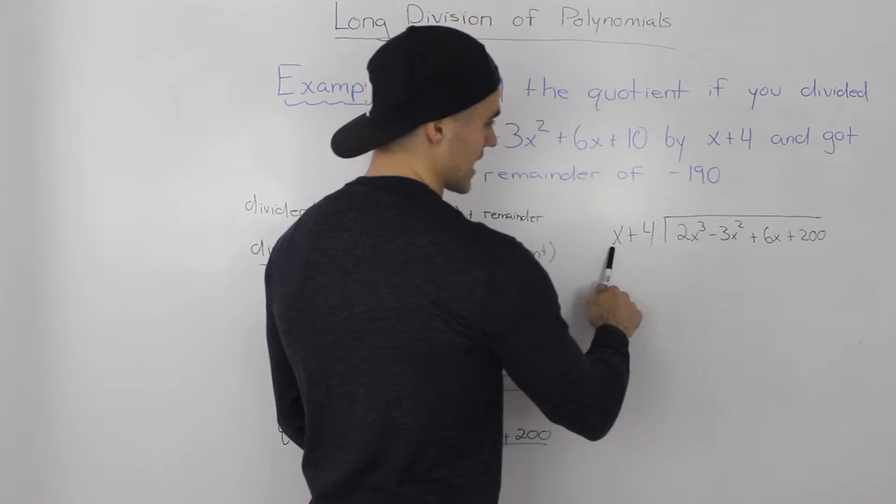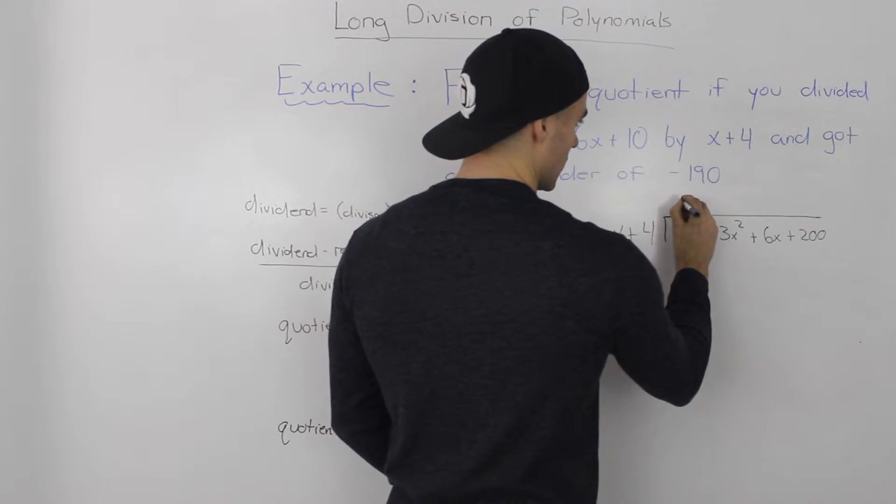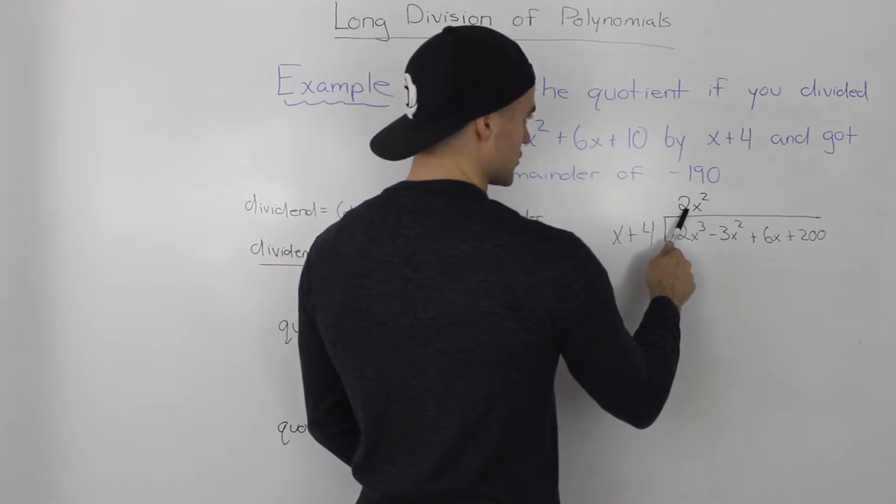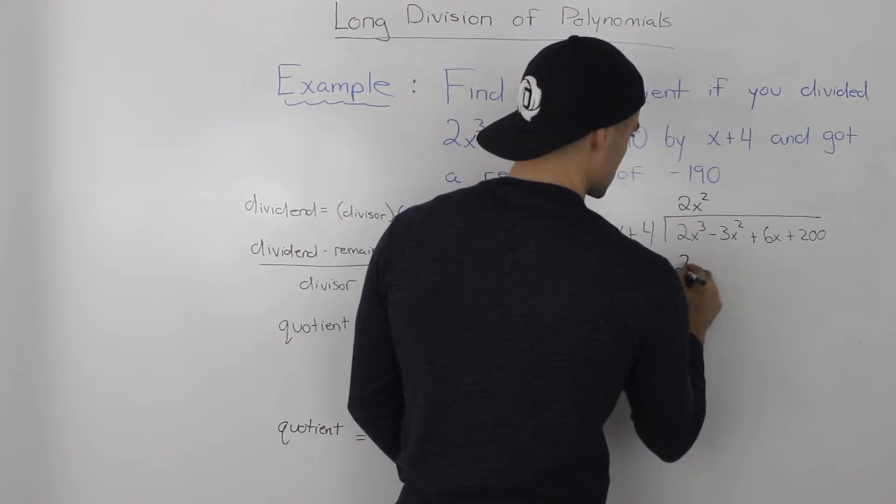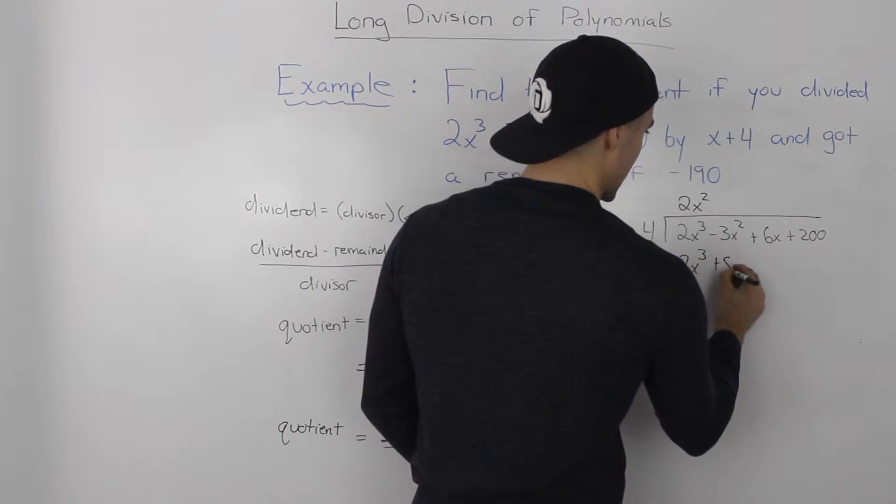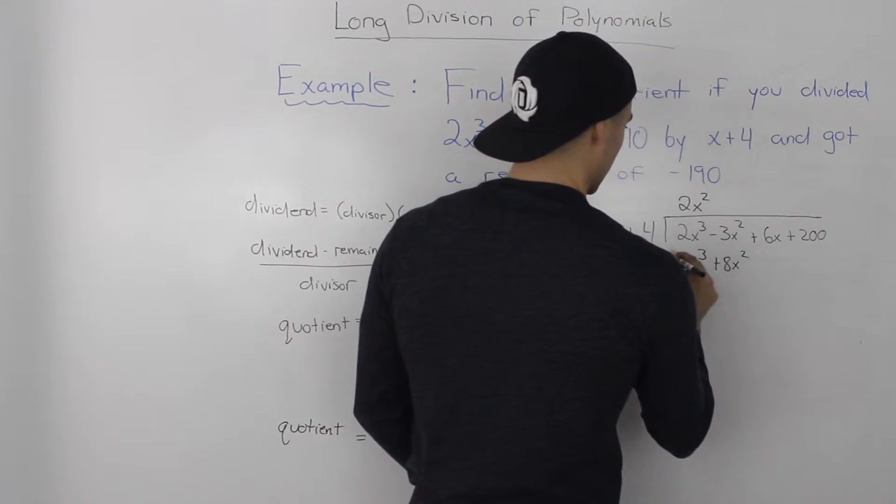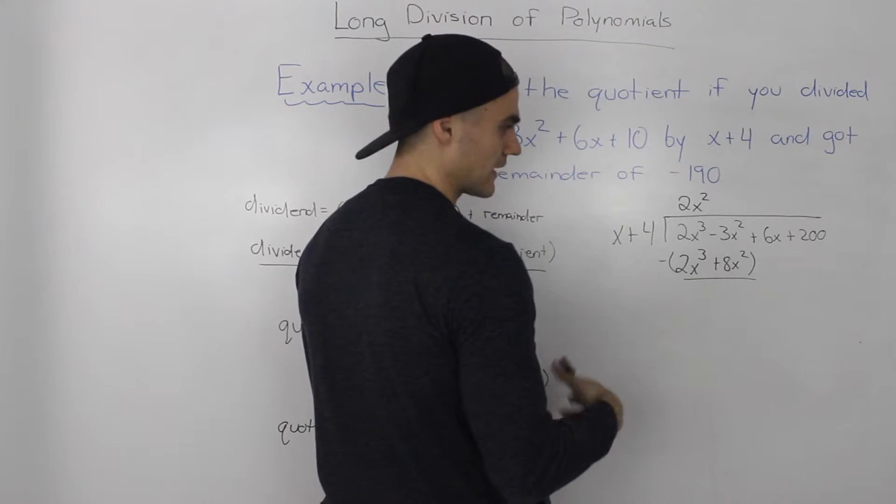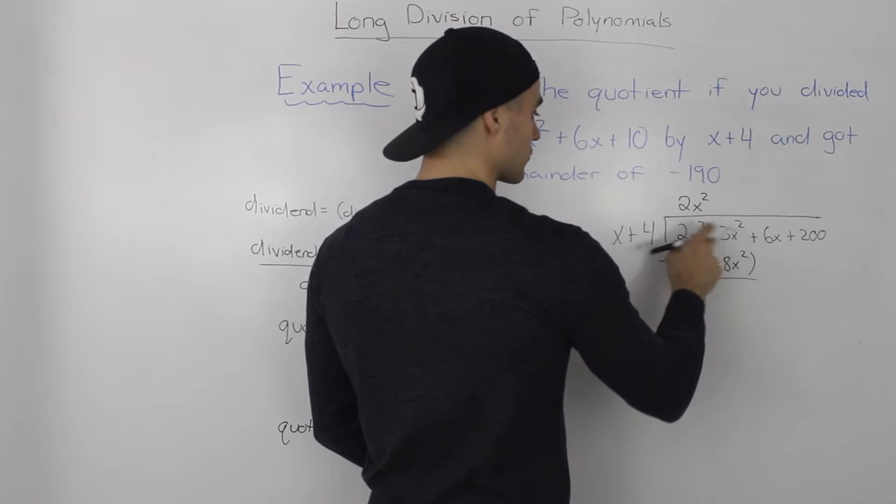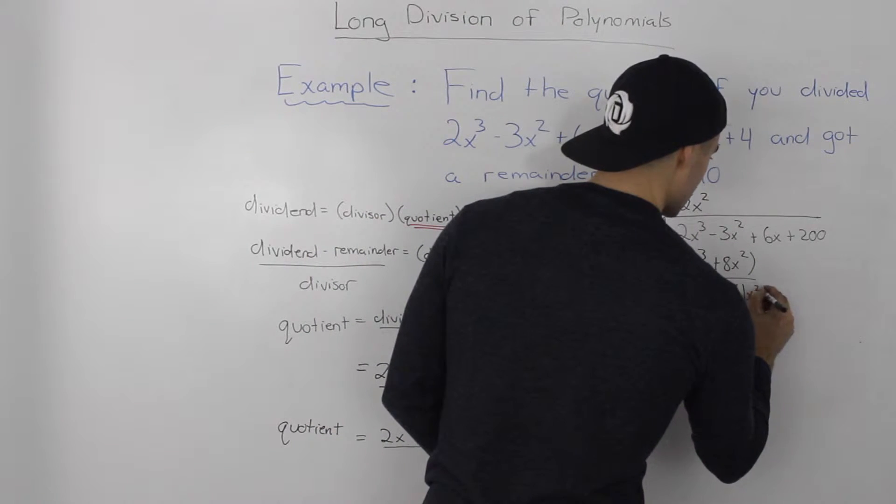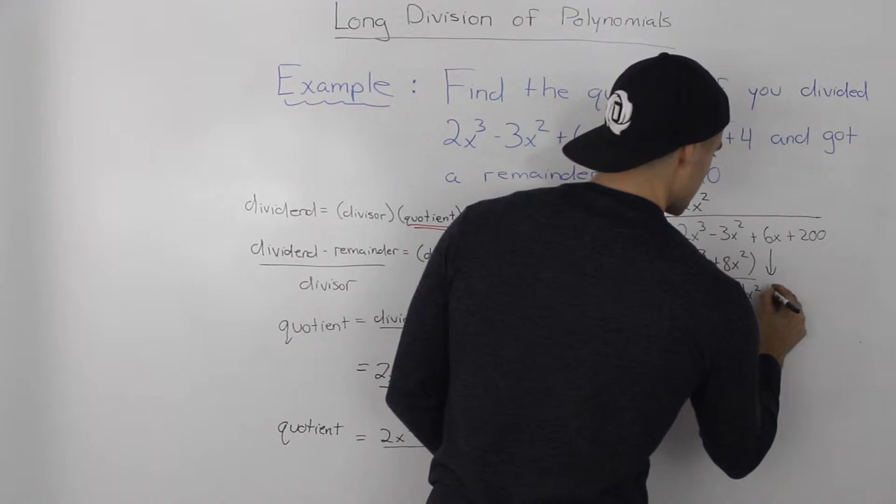How many times does x go into 2x cubed? It goes 2x squared times. Then 2x squared times x gives us 2x cubed, and 2x squared times 4 gives us 8x squared. When we minus these, 2x cubed minus 2x cubed nets out to 0. Negative 3x squared minus 8x squared gives us negative 11x squared. We bring down this 6x.